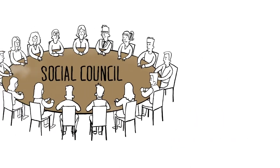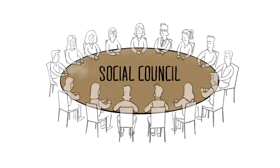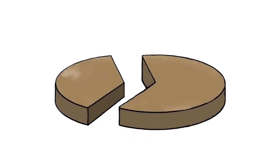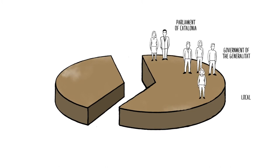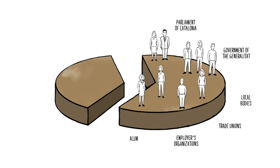The Social Council, as a representative body of society, consists of nine members elected by the Parliament of Catalonia, the Government of the Generalitat, local bodies, trade unions and employers organizations, as well as an alumni representative, all of whom constitute a representative sample of the social fabric of Catalonia.